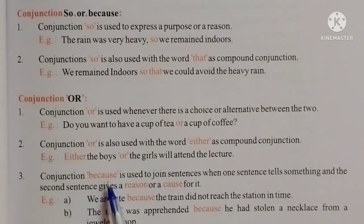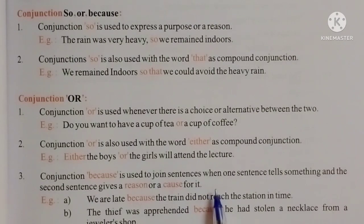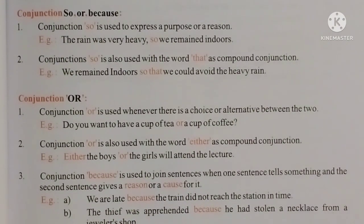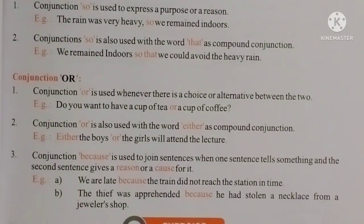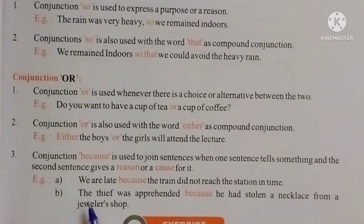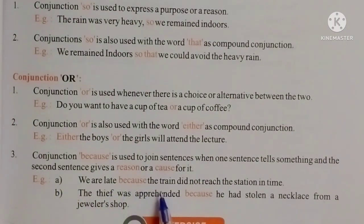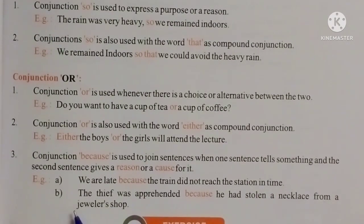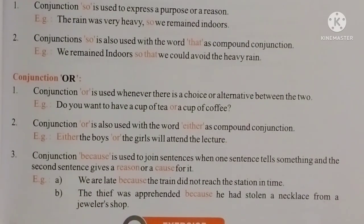Conjunction 'because' is used to join sentences when one sentence tells something and the second sentence gives a reason or cause for it. Example: We are late because the train did not reach the station in time. The thief was apprehended because he had stolen a necklace from a jeweller's shop.